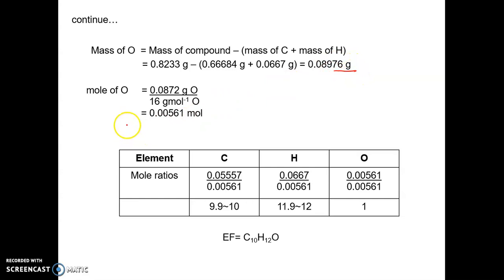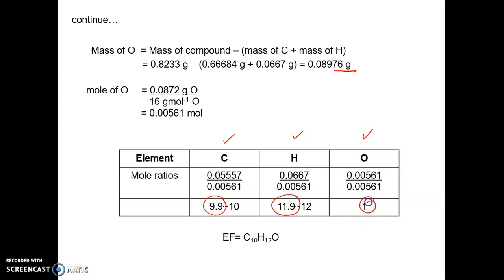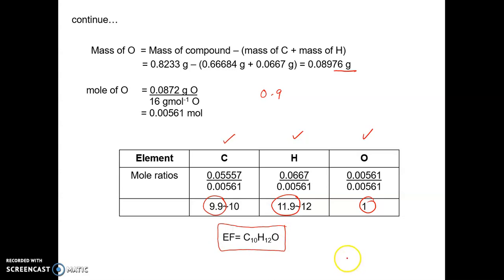After obtaining the mass of oxygen, we calculate its moles and enter all values into the table. We now have moles of carbon, hydrogen, and oxygen. We divide by the smallest number of moles, which belongs to oxygen, giving values of 9.9, 11.9, and 1. Since 9.9 and 11.9 are within 0.1 of whole numbers, we round them to 10 and 12. The empirical formula is therefore C₁₀H₁₂O.